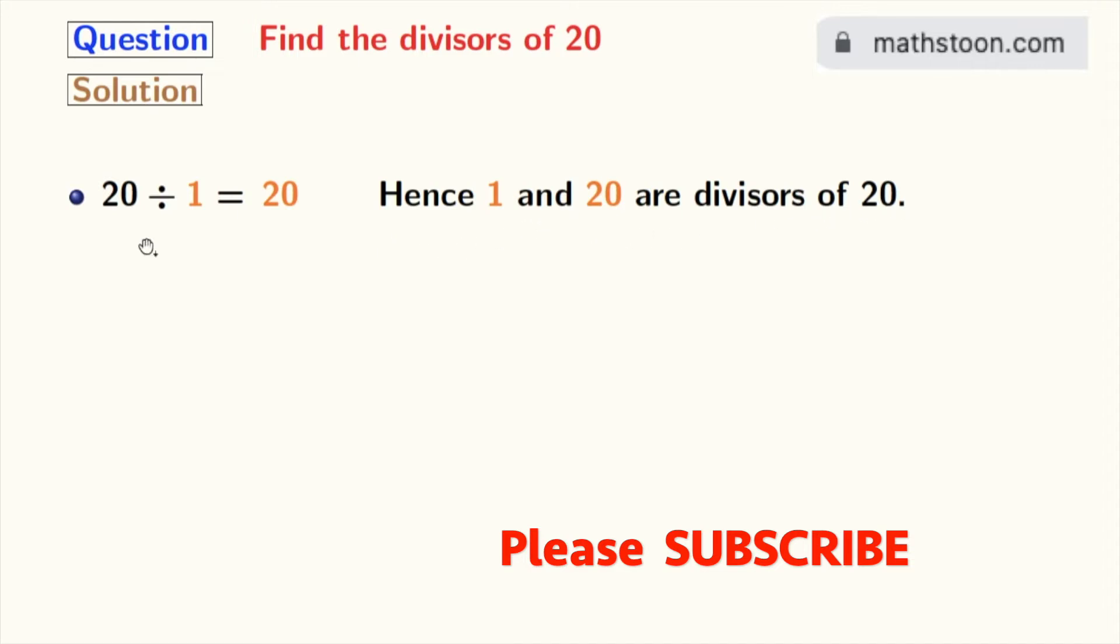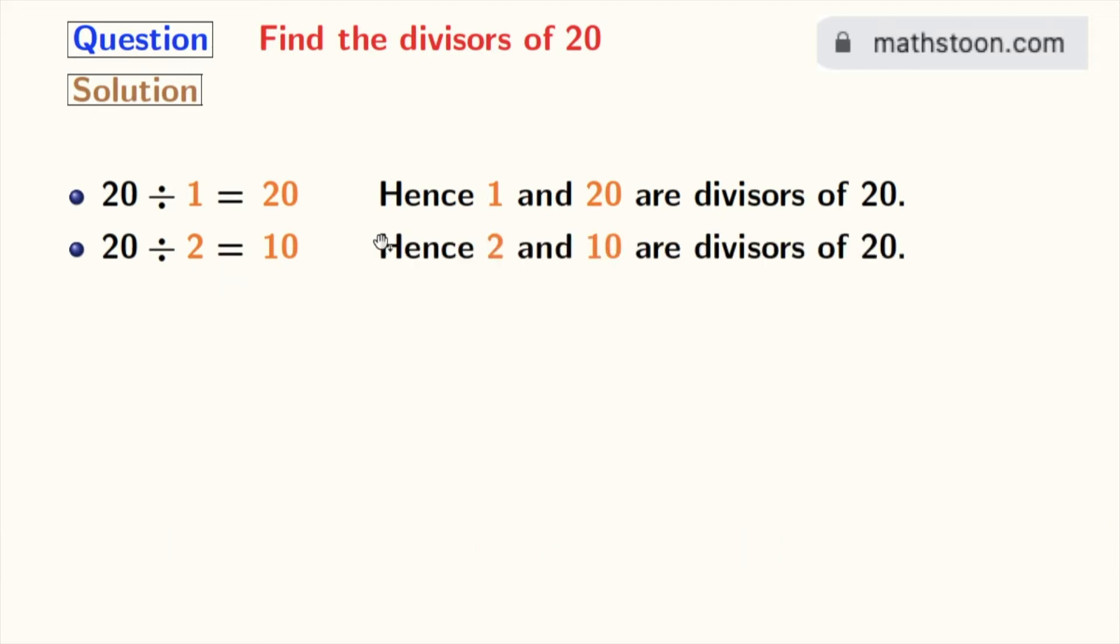Now we will try 2, and we see that 20 divided by 2 equals 10. So, 2 and 10 are the divisors of 20. Now we will try 3, but 3 does not divide 20.